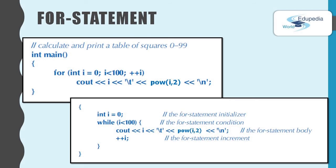Take a look at the parenthesis area of the for loop. It has three parts separated by two semicolons. In the first part, int i equals 0, it is the for statement initializer.